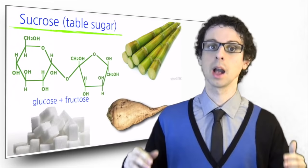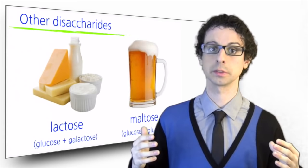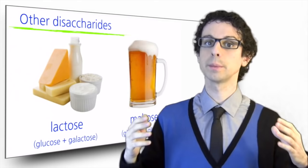When a molecule of glucose combines with a molecule of galactose, we get lactose. Lactose is the main sugar present in milk and dairy products.